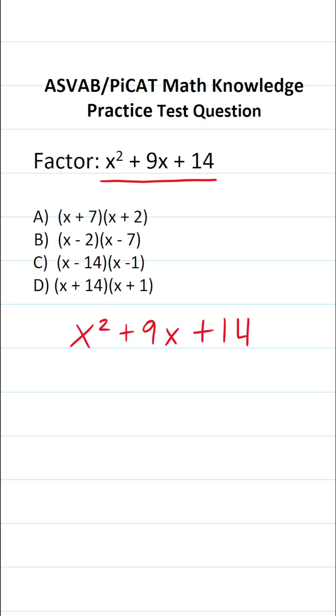This is a quadratic that has a leading coefficient of 1. So if we can factor it, it's going to look like this. And I know many of you can solve this one mentally. But in order to factor this one, we're looking for two numbers that multiply to positive 14 and add to positive 9.